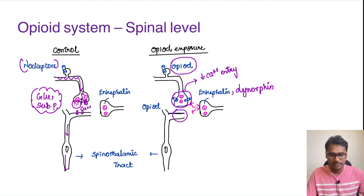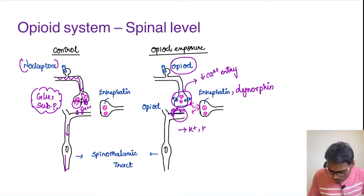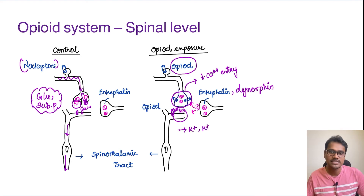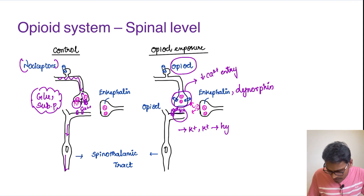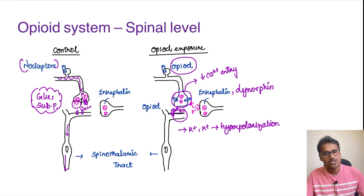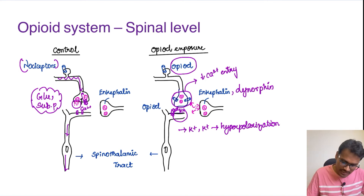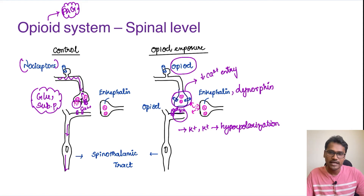At the post-synaptic membrane, the opioid system increases the permeability of potassium ions. As potassium ions move out, it hyperpolarizes the membrane, making it very difficult for the post-synaptic membrane to get activated, leading to hyperpolarization. This opioid system not only acts at the spinal level but also acts at the supraspinal level, directly influencing the periaqueductal gray matter region and causing reduction in pain.